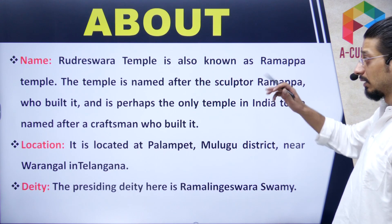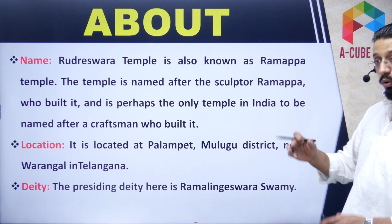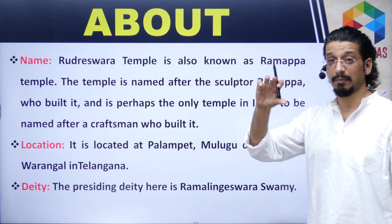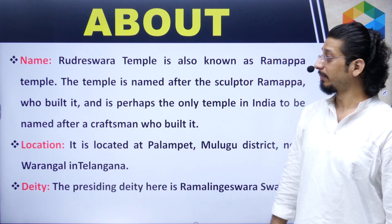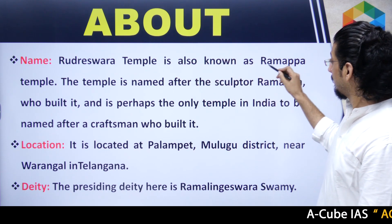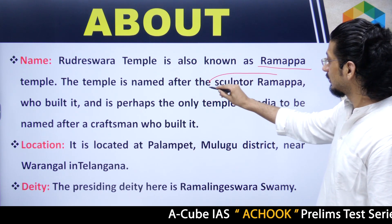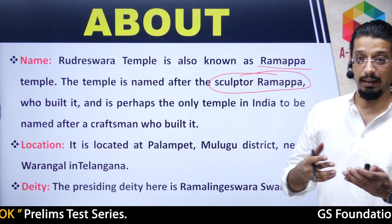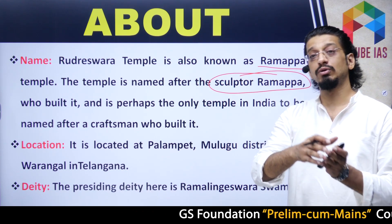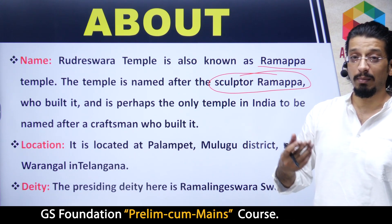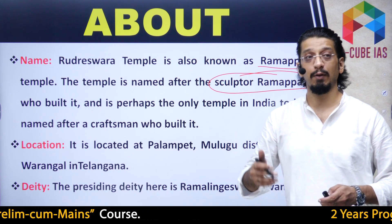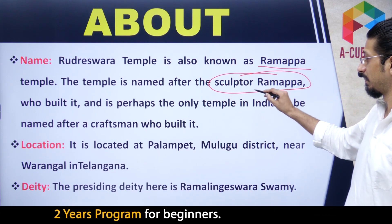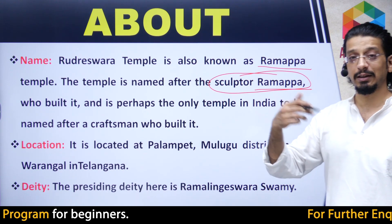Now we will learn about Ramappa Temple in detail. The official name is Kakatiya Rudreshwara Ramappa Temple — so this is Rudreshwara Temple — but it is also named after the sculptor Ramappa. This is the only temple in India where the temple is named after its sculptor, because normally monuments are named after kings or presiding deities, but this temple is in the sculptor's name, Ramappa.